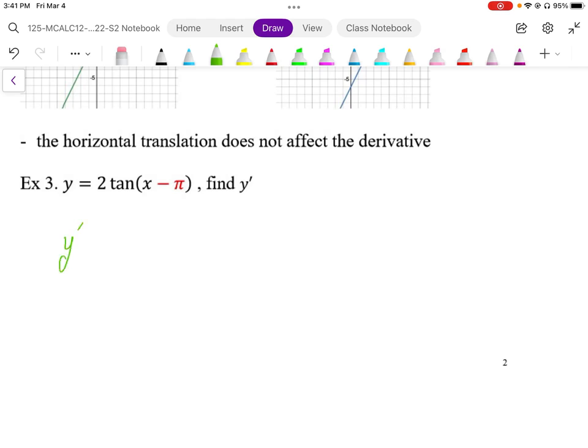the 2 on the outside has no effect on the derivative. I differentiate the tan. That becomes secant squared.